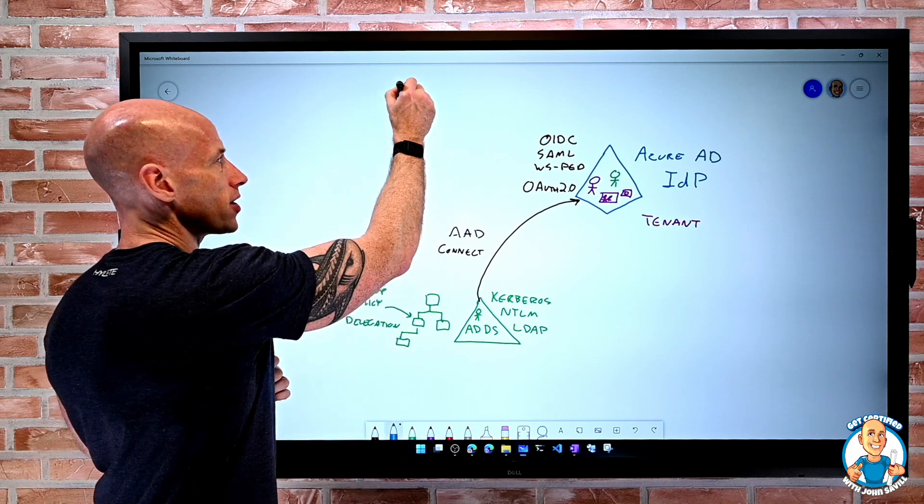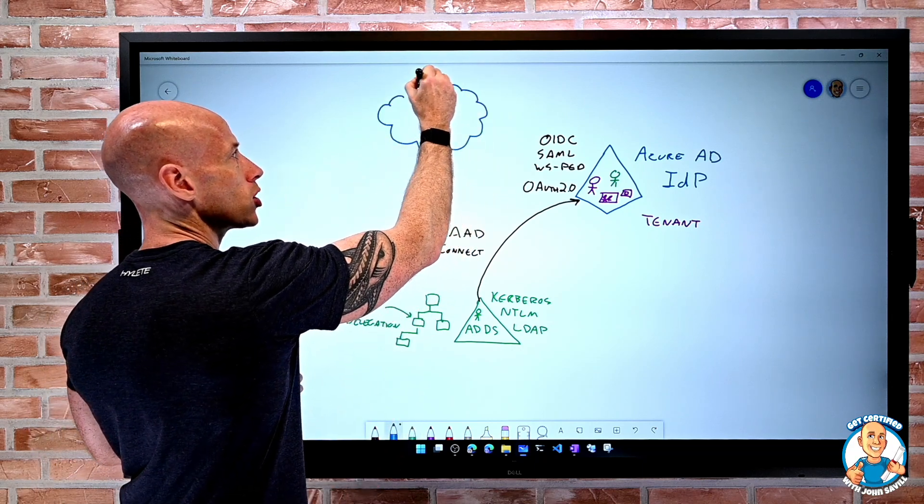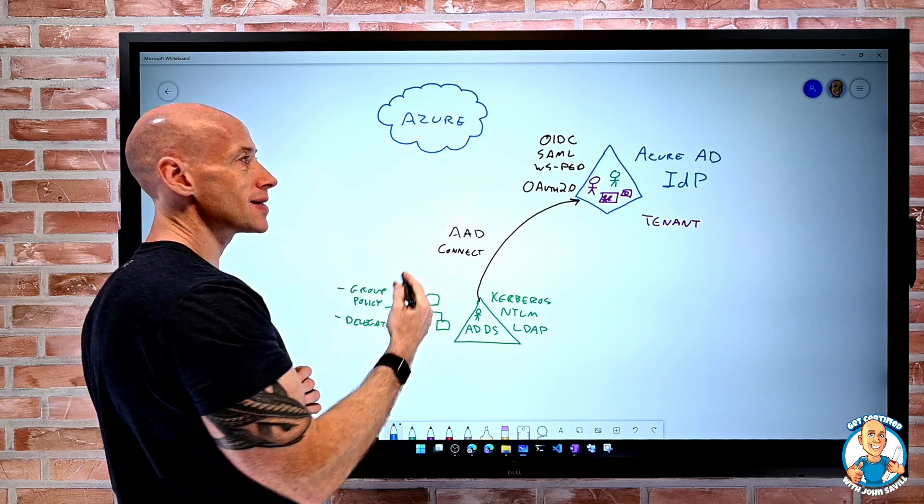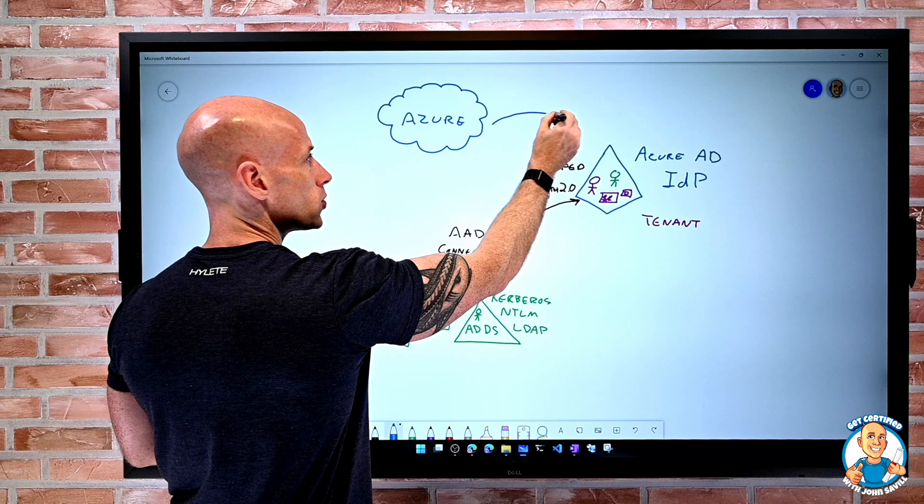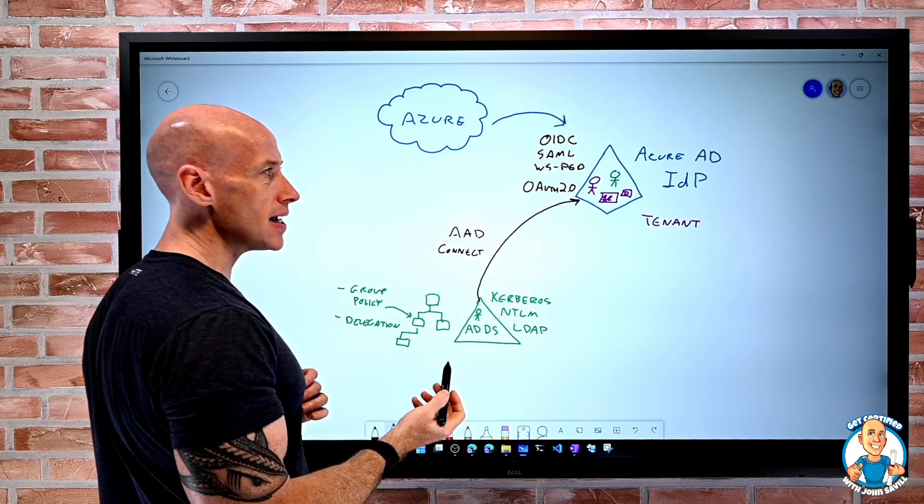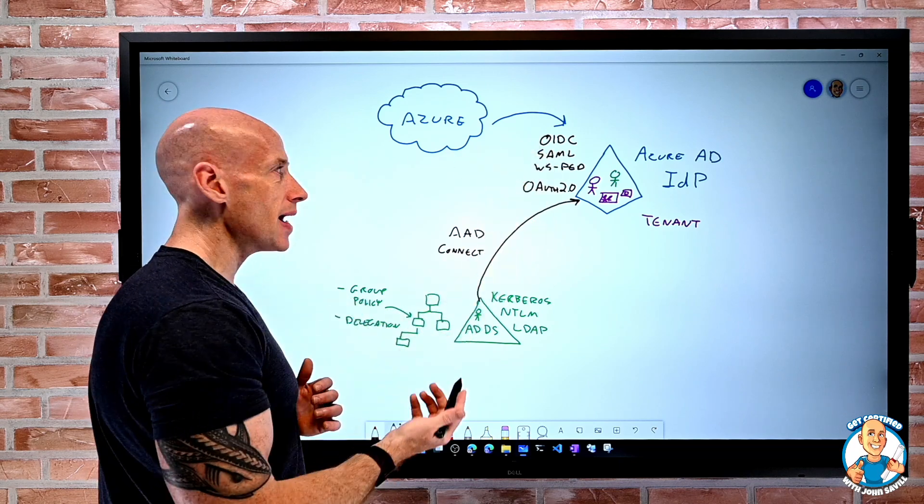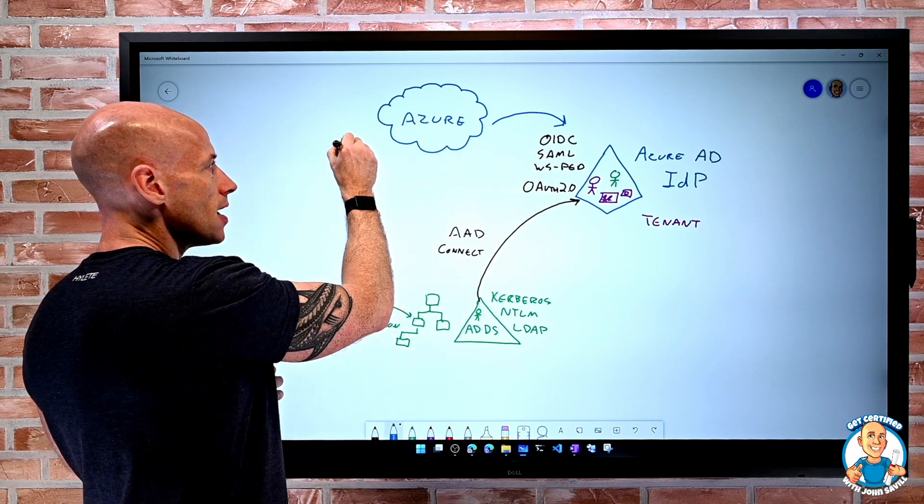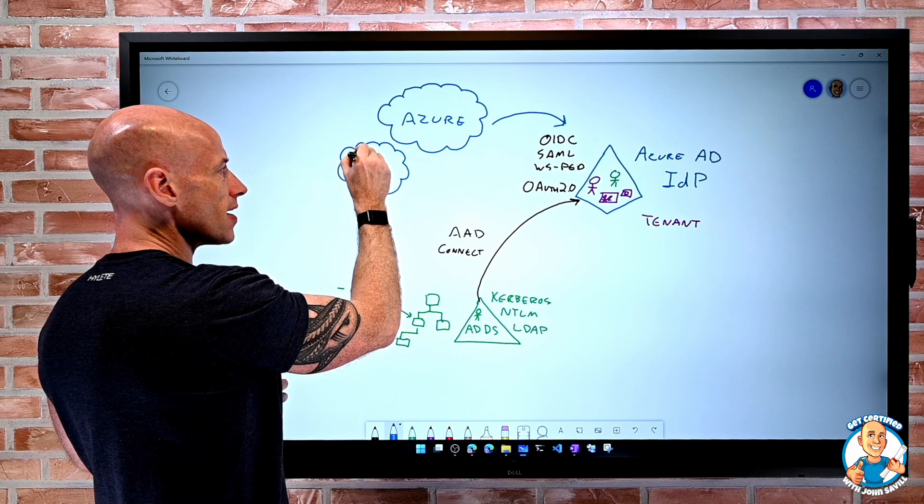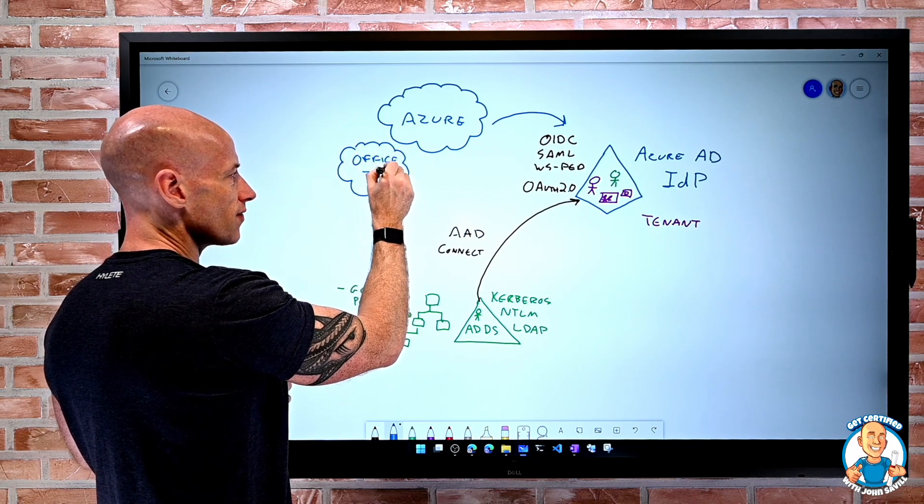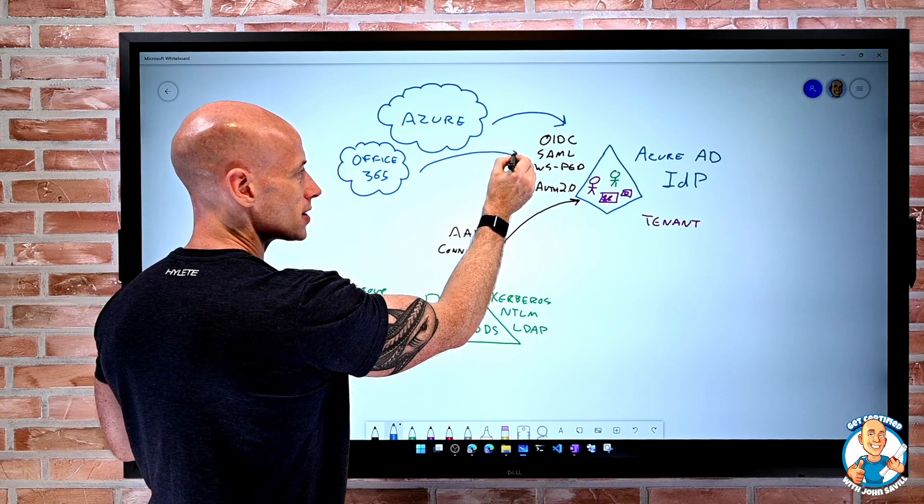When I create Azure subscriptions, that subscription trusts a particular tenant. It's trusting Azure AD and uses the accounts and groups from that tenant to give rights to things. Things like Office 365, Microsoft 365, and Dynamics 365 trust Azure AD.